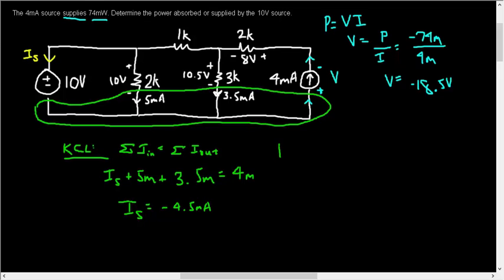So then the power of the 10 volt source is going to be V times I, or 10 times negative 4.5 milli, or negative 45 milliwatts. Because our power is negative, it means we are supplying power. So 45 milliwatts being supplied. Here's our answer.